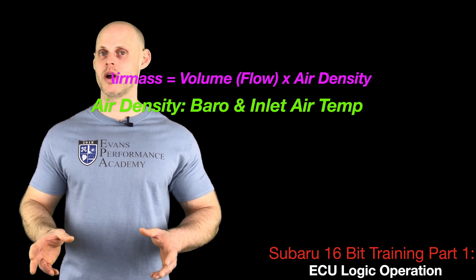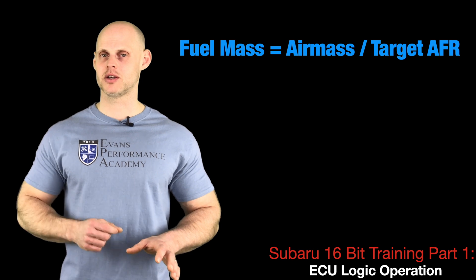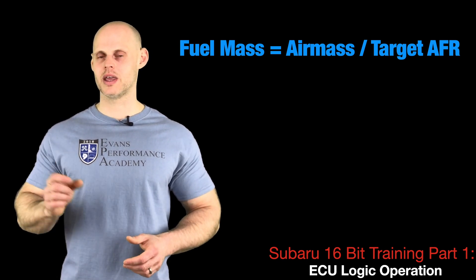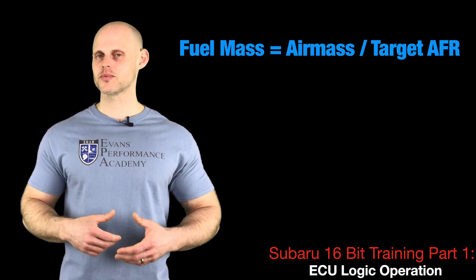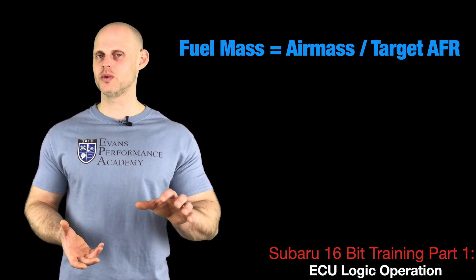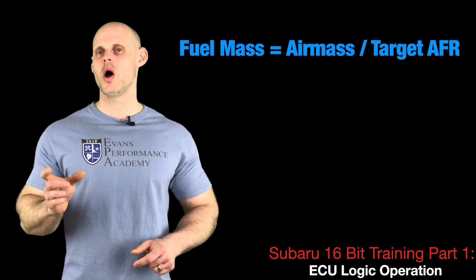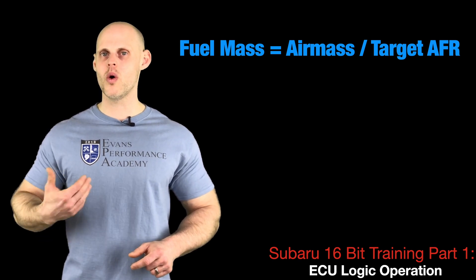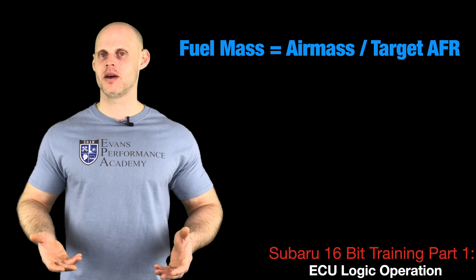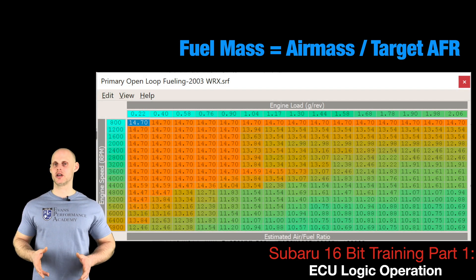Going back to our equation: fuel mass is equal to air mass divided by target air fuel ratio. Knowing the air mass alone isn't enough — we also need to know the target air fuel ratio, what we want the engine to run at a given RPM and load range. We'll find there's a table associated with this.